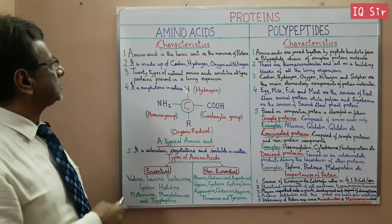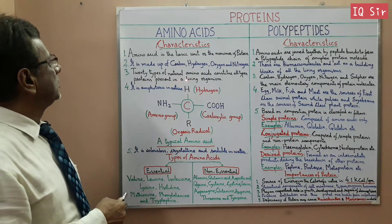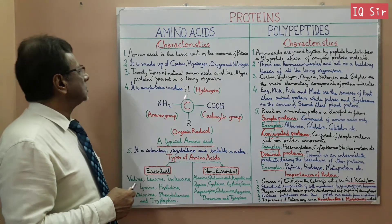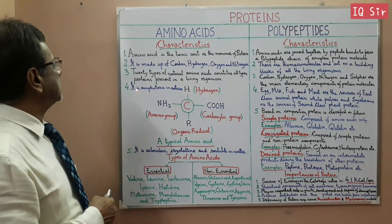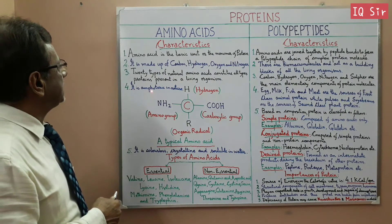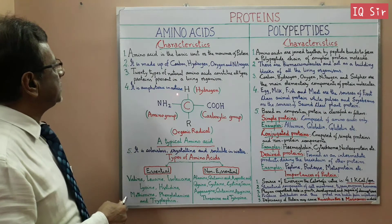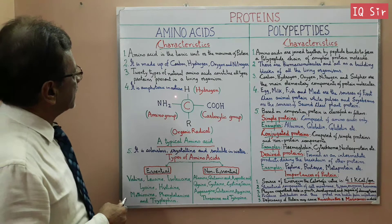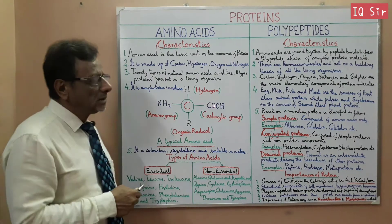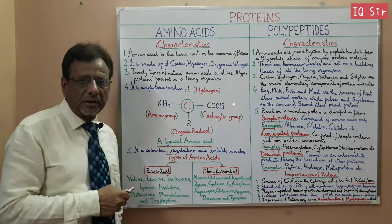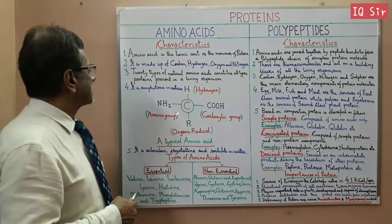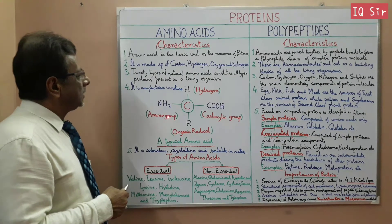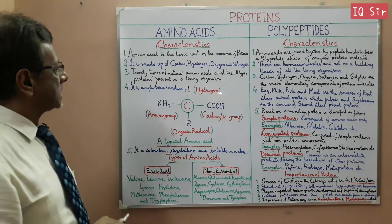Therefore, altogether 20 types of Amino Acids are there. It is said that Amino Acid is amphoteric in nature. It means, when combined with an acid, it behaves like a base, and when combined with a base, it behaves like an acid.